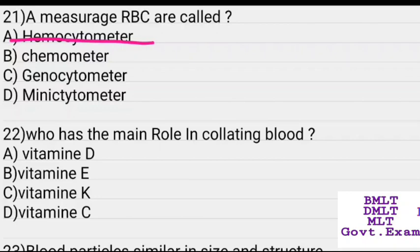Which vitamin has the main role in clotting blood? Options: Vitamin D, Vitamin E, Vitamin K, Vitamin C. Answer: Vitamin K.